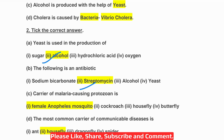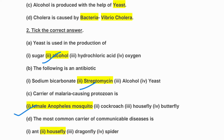C: Carrier of malaria-causing protozoan is — first female Anopheles mosquito, two cockroach, three housefly, four butterfly. The correct answer is first: female Anopheles mosquito.